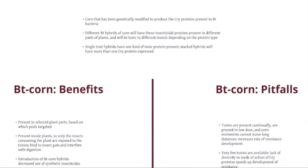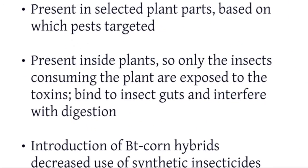Let's move on to some of the benefits and pitfalls of BT corn, and I should mention that these are not exhaustive — I only highlight a few important points as they apply to insect management and insect resistance management. One of the most important benefits is that the toxins are present in select plant parts based on which pest is targeted, and they are present inside the plants, so only the insects consuming the plants are exposed. The major point is that BT present in select tissues and inside the plant has in general lower non-target effects than synthetic insecticides applied as sprays, and the introduction of BT corn hybrids has definitely decreased the use of synthetic insecticides to manage these insects.